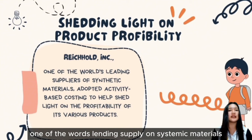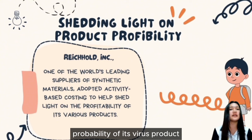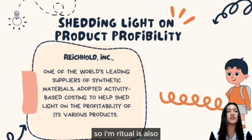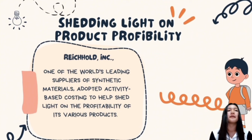One of the world's leading suppliers adapted activity-based costing to help shed light on the profitability of its various products. Richhold is one of the leading companies that shifted to activity-based costing to better understand the profitability of their different products.